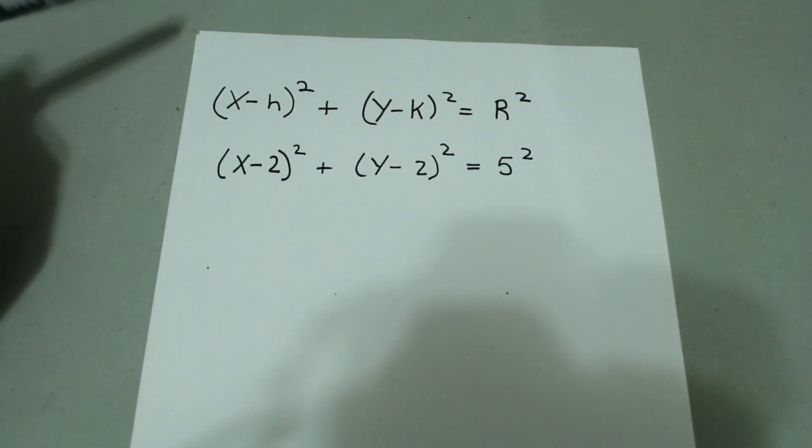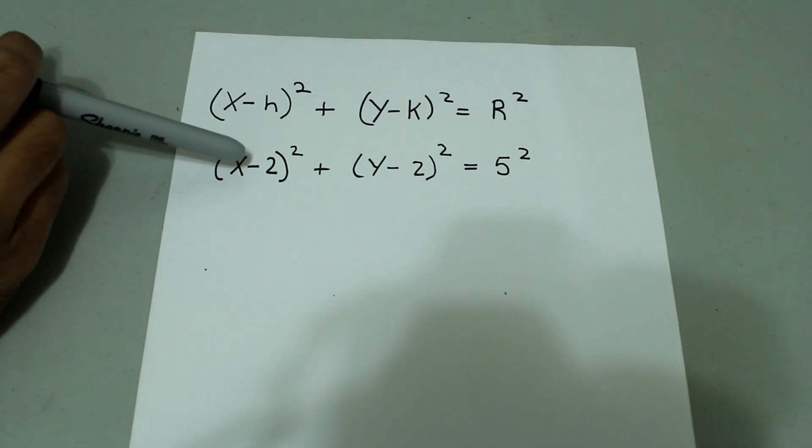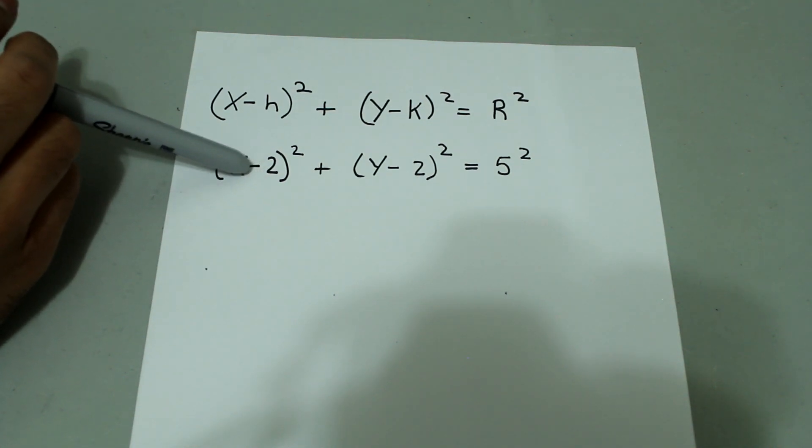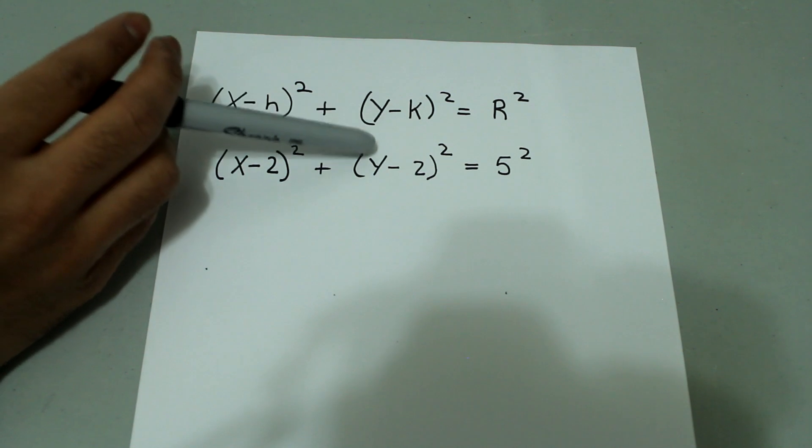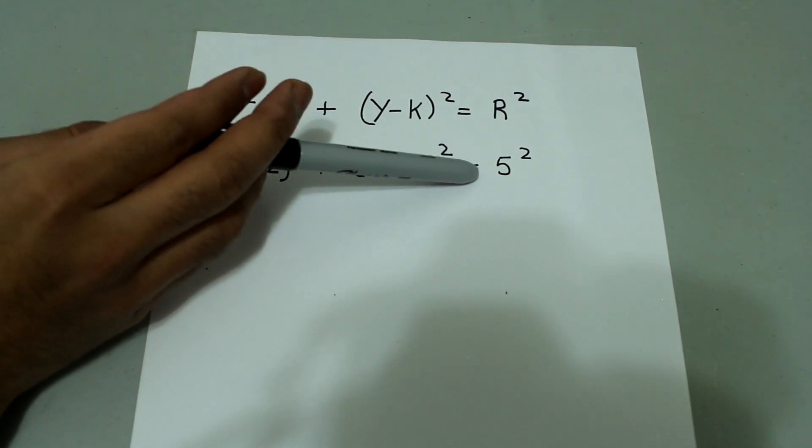So this circle is moved 2 units to the right, the center of the circle is moved 2 units to the right and 2 units up and the radius is 5.